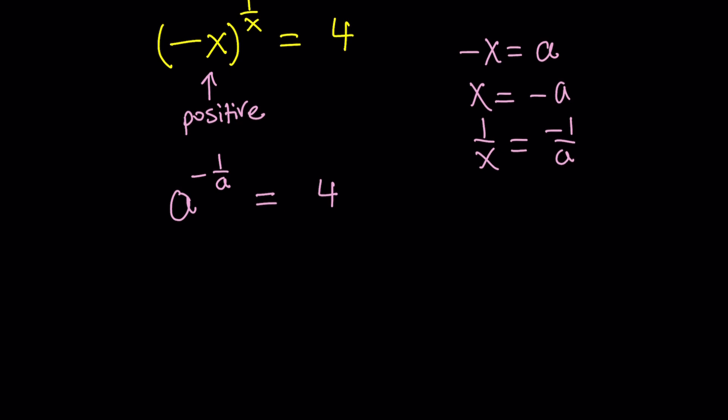At this point, you can leave it like this. What does a to the power of negative 1 over a mean? It means 1 over a to the power 1 over a equals 4. And from here, we get a to the power 1 over a is equal to 1 over 4. Is that helpful? Not that much, sort of.